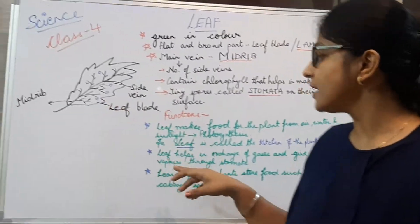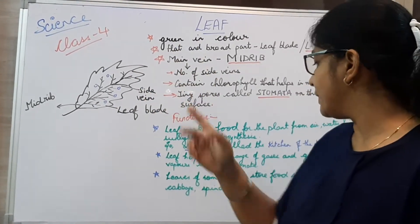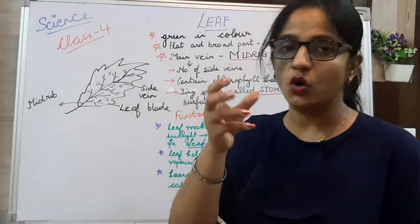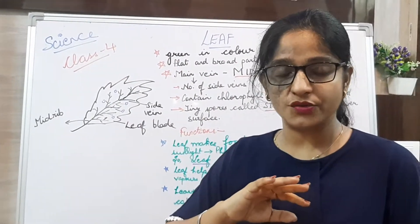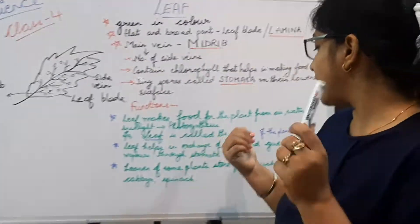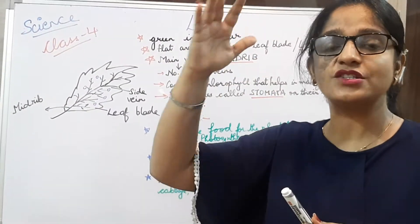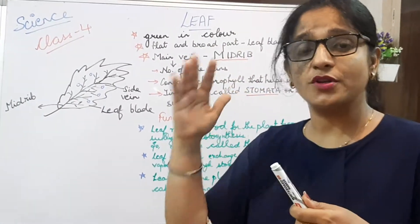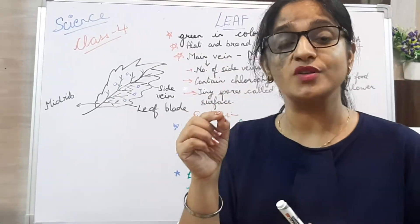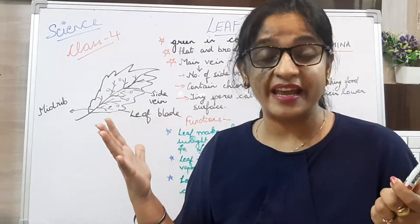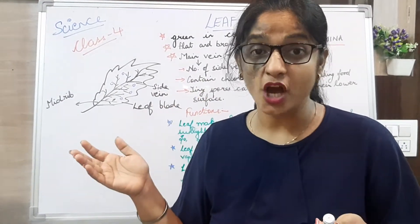Leaf helps in exchange of gases and gives out water vapors through stomata. Stomata are the holes through which exchange of gases takes place, and water vapors are also released through these holes. This process of releasing water vapors through these tiny holes is called transpiration, which will be described in detail in the upcoming topics.